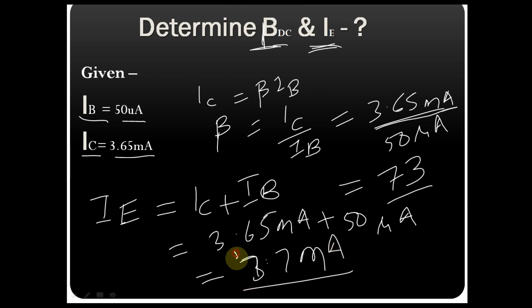So you have your two answers: beta is 73 and IE is 3.7 milliampere. This is DC current gain beta, so your beta is 73 and your value of IE is 3.7 milliampere.